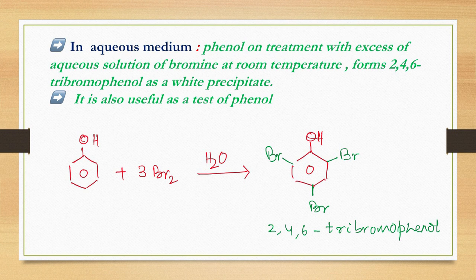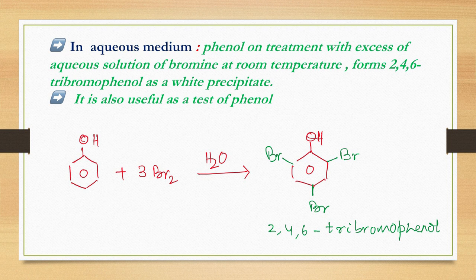This halogenation reaction is an important test for phenol — bromine color is discharged and a white solid forms, distinguishing phenol from alcohol. What happens when phenol is treated with bromine water? Answer: 2,4,6-tribromophenol.